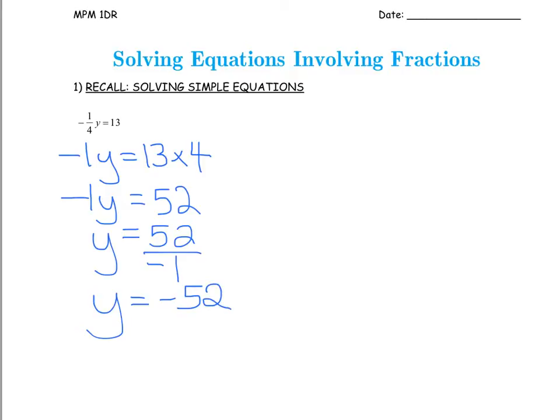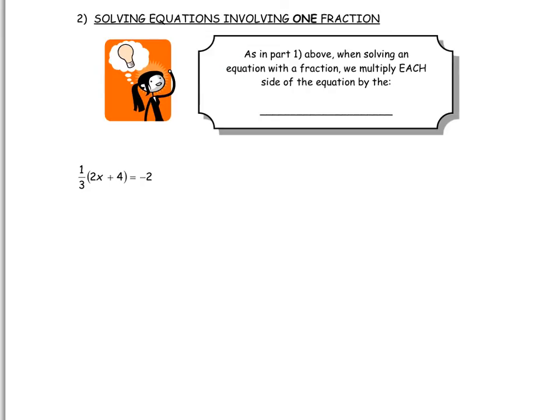We have done simple equations like that already. Now we're going to make them a little more complicated, like this next example. Notice in this example there is one fraction, but it is a little more complicated — we do have a bracket. When solving an equation with a fraction, we're going to multiply each side of the equation by the denominator, this 3.